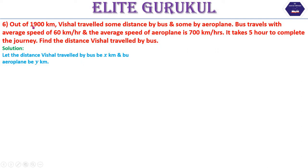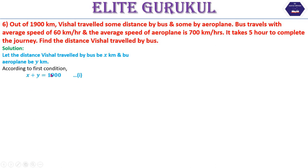The total distance is 1,900 km. Bus distance plus aeroplane distance equals total distance: x plus y equals 1,900. This is equation 1.